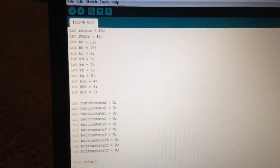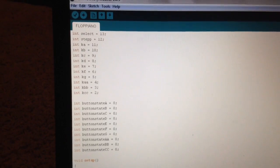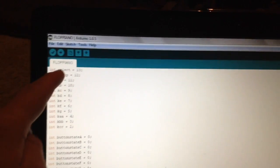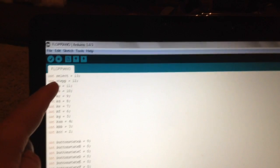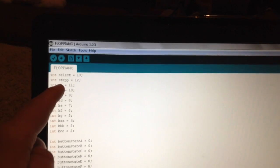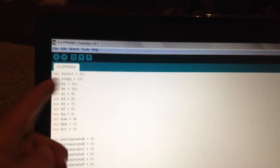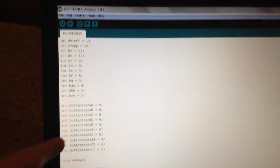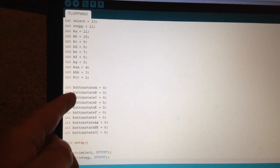Here is the code that I used for my floppy drive piano. I have all the inputs. I have the select pin, the step pin, and all the piano pins. I called these key A, key B, and so on. I also have the button state ints inside here too.